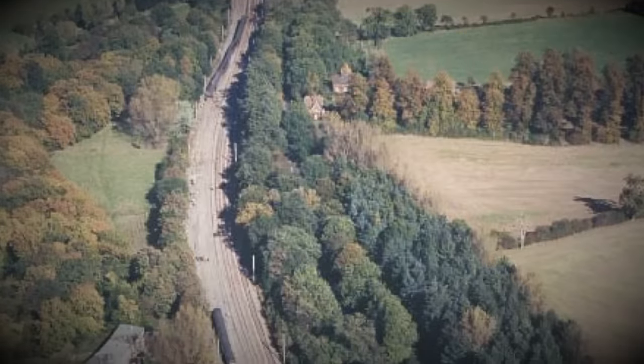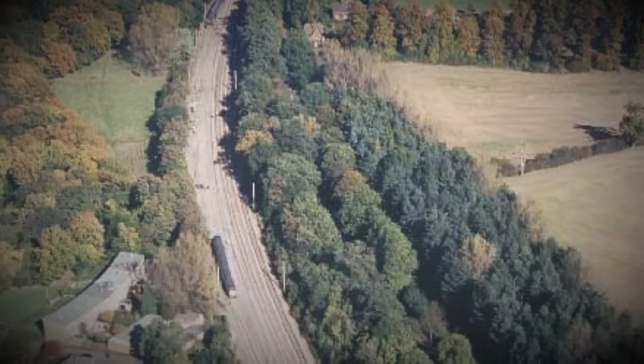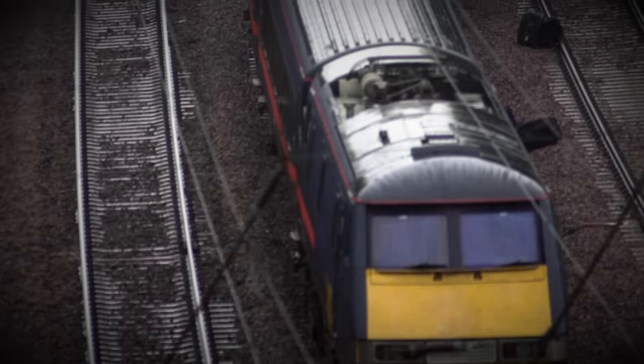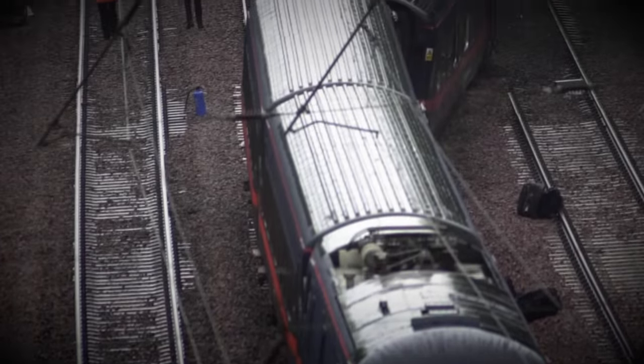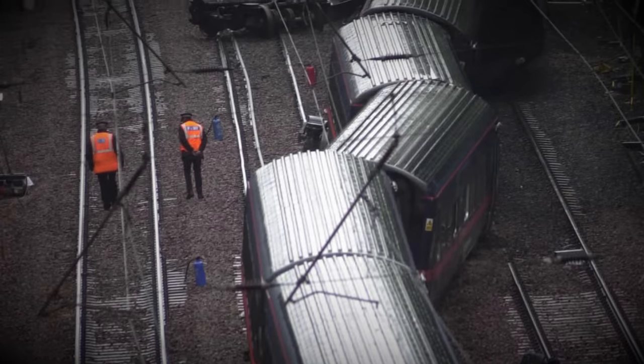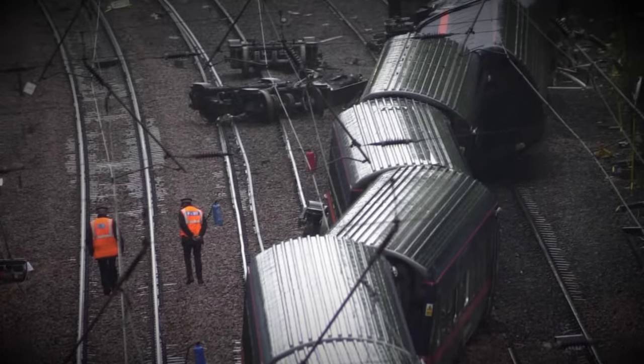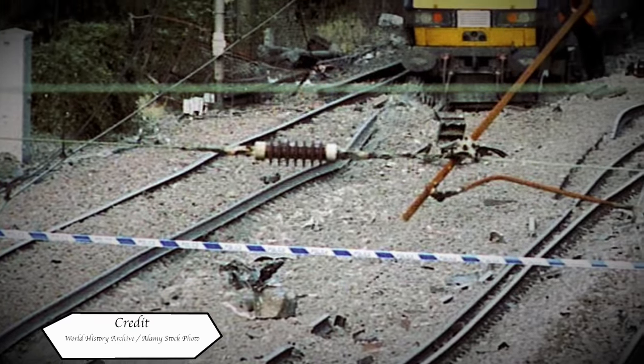Once all the vehicles had come to stop, the driver made the necessary calls to the signaller and the guard made use of his mobile phone to call GNER control. The overhead lines were switched off, however power can still run through the lines for quite a while after. The guard helped evacuate passengers safely from the train and within 10 minutes the first emergency workers had arrived on scene.